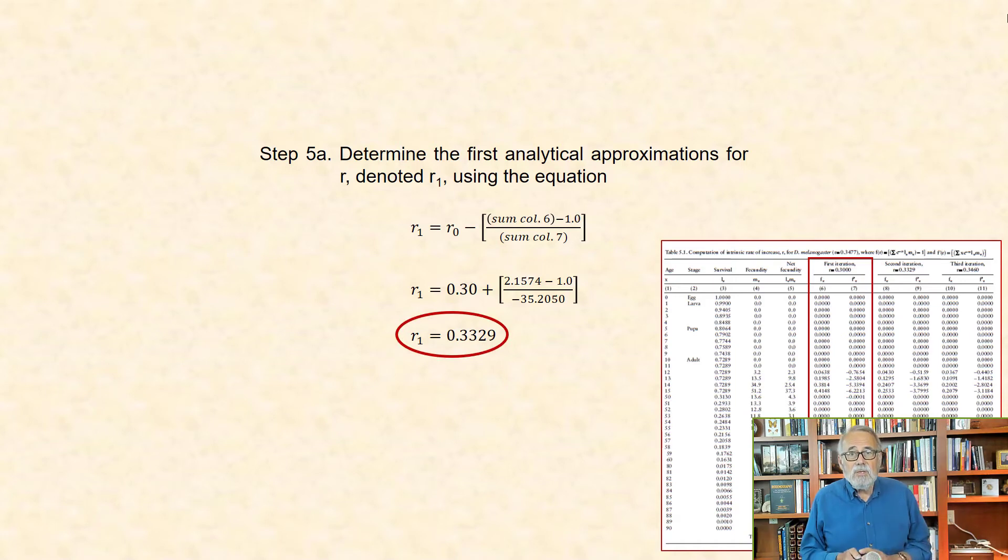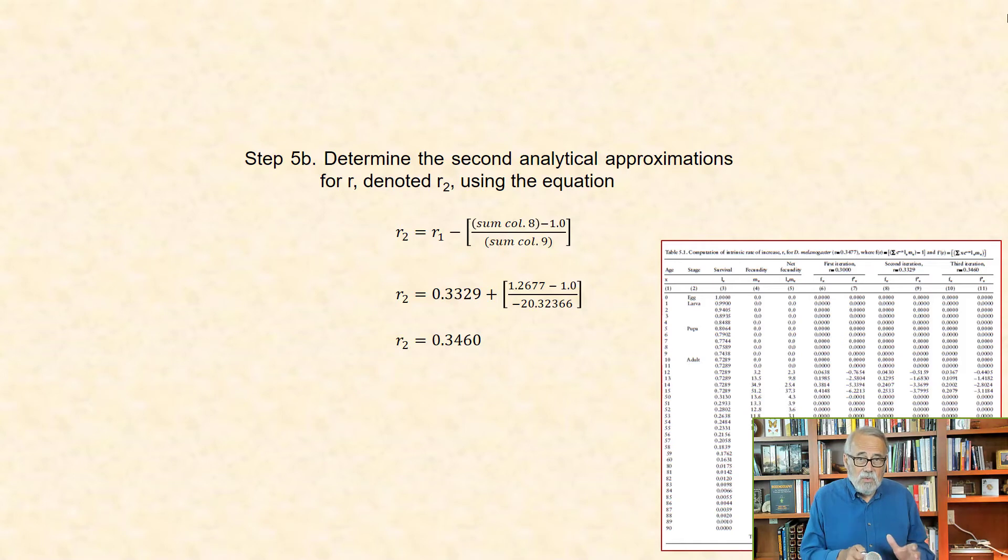Step 5b: Here the value of r2 is computed as the value of r1 from this first iteration we just showed, minus the value of the same computations as before, but using the sums of columns 8 and 9 in the equation. This step yields an estimated value of r as r2 equal 0.3460.